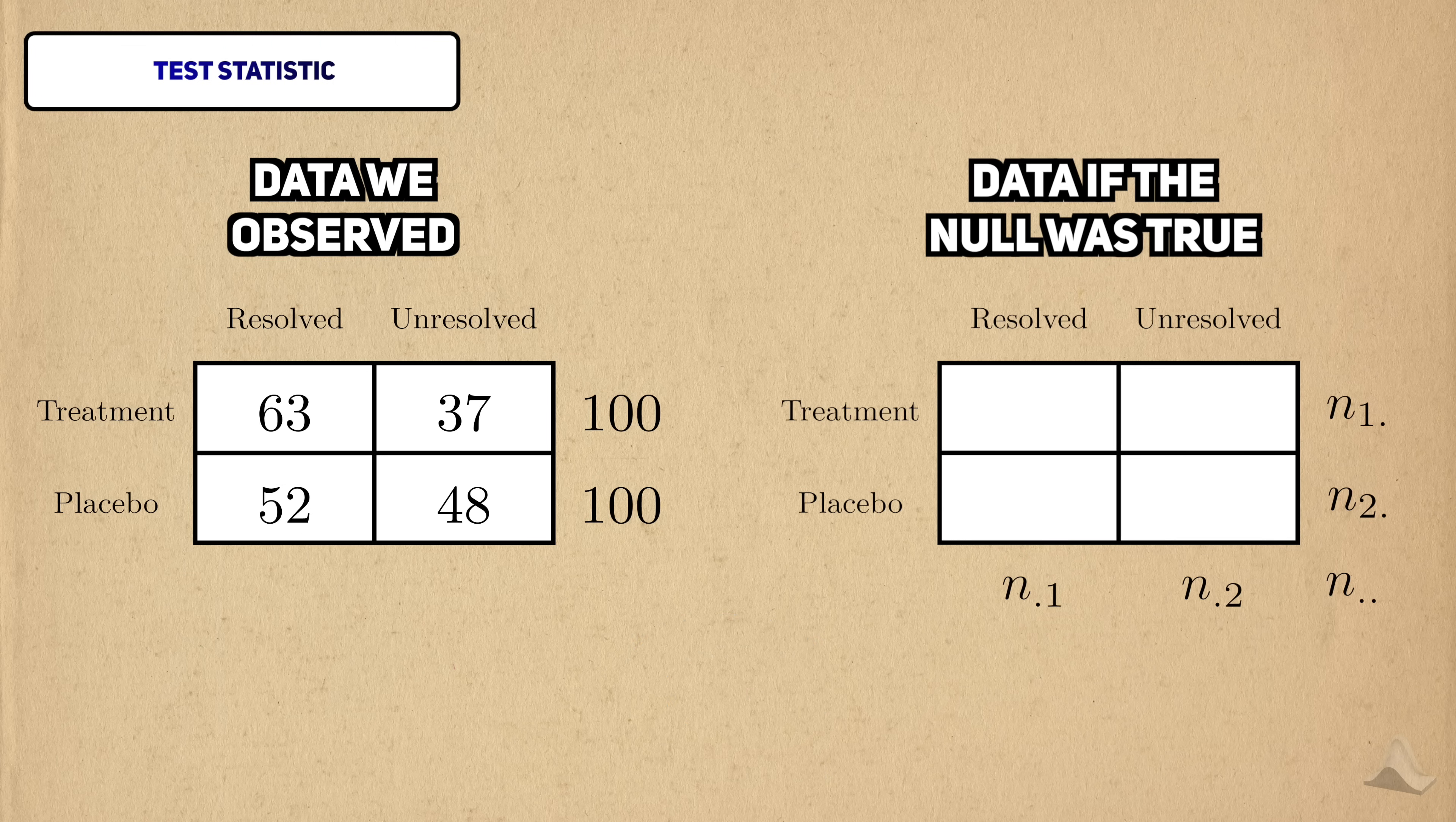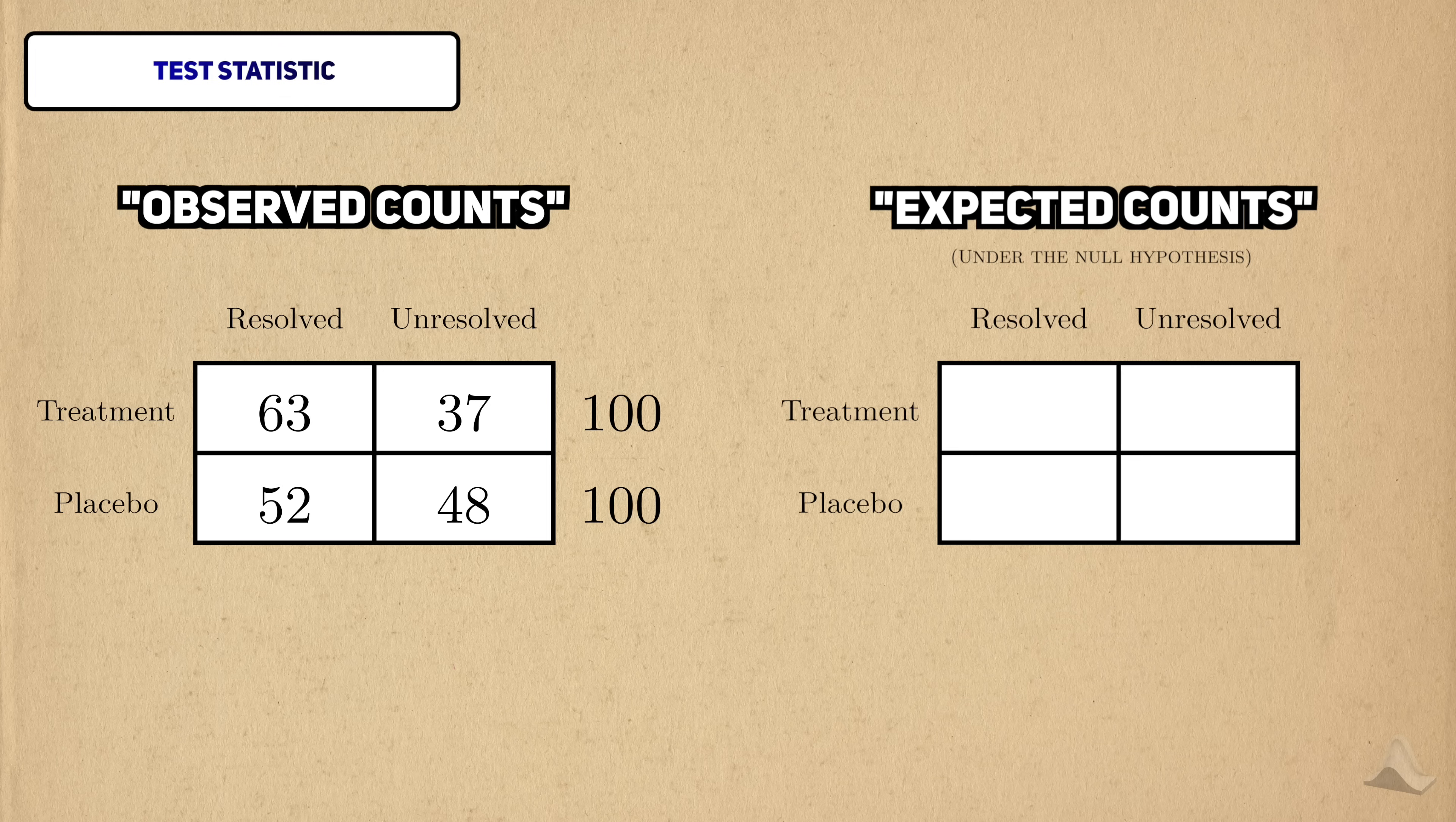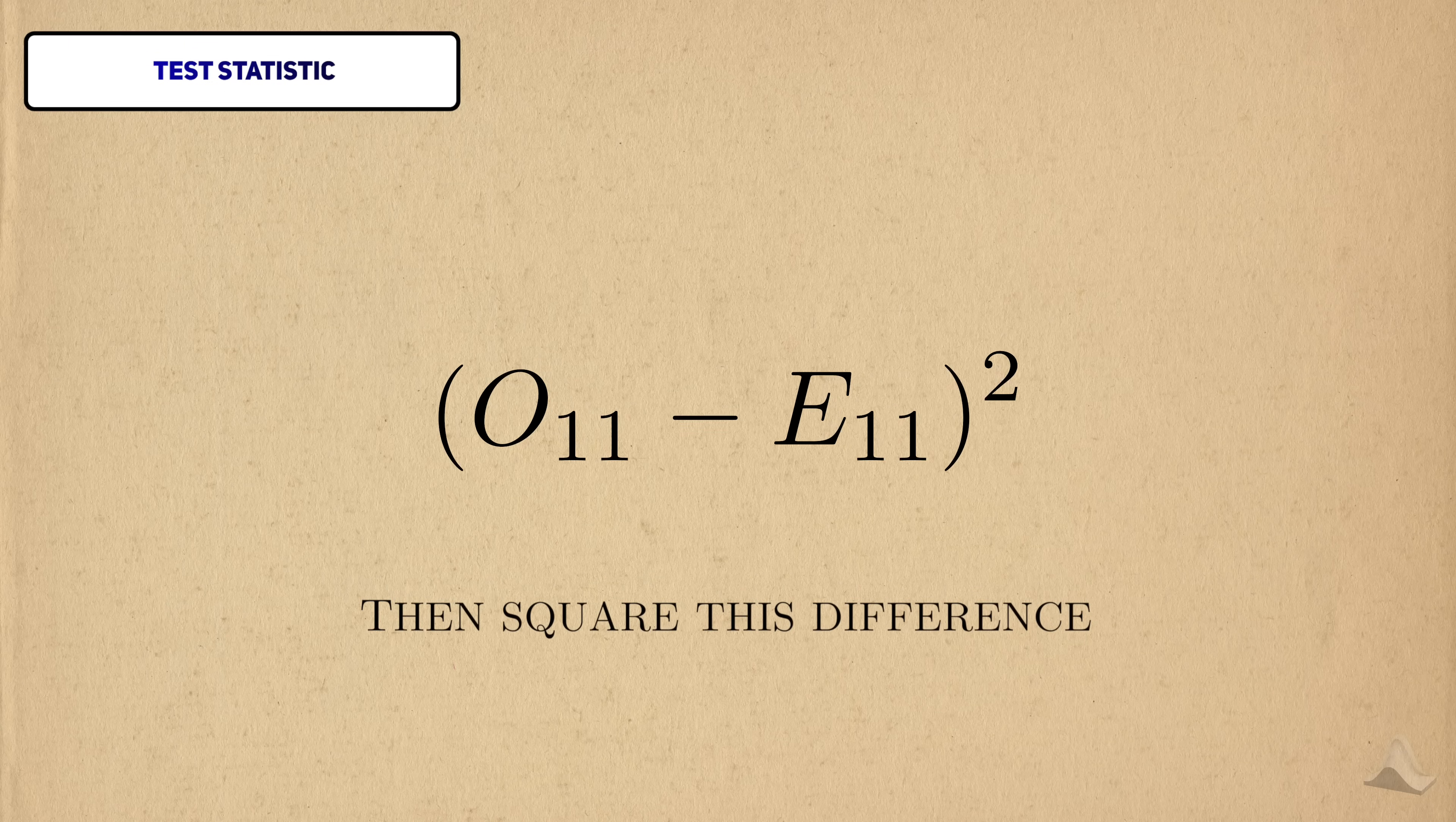So we have two contingency tables, one with the data we actually observed, and another with the counts we would expect under the null hypothesis. We're going to use the information from both tables to construct the test statistic. I'll use this first cell to start describing how we might do this. First, we take the difference between what we observed and what we expected, and then square the difference. I'll use this O to denote what we observed in the cell, and E to denote what we expected.